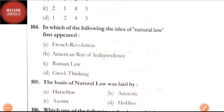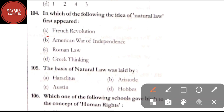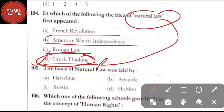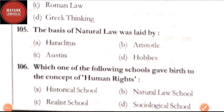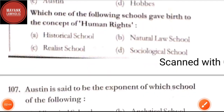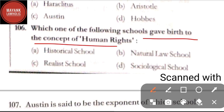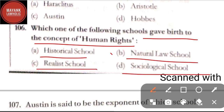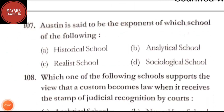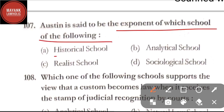Question number 104: in which of the following did the idea of natural law first appear — option A: French Revolution; option B: American War of Independence; option C: Roman law; option D: Greek thinking. The correct answer is option D, Greek thinking. Question number 105: the basis of natural law was laid by — option A: Heraclitus; option B: Aristotle; option C: Austin; option D: Hobbes. The correct answer is option A, Heraclitus.